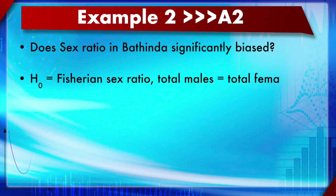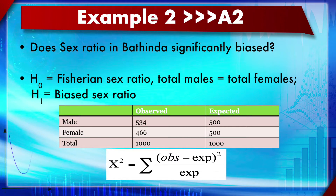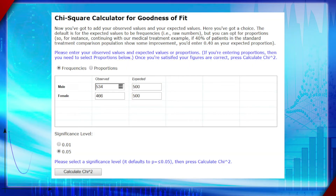Assignment 2: Does the sex ratio in Batinda significantly deviate? The null hypothesis is the Fisherian sex ratio — males equal females, or male-to-female ratio equals one. The alternative hypothesis is a biased sex ratio. fe is calculated from the explicit model of a 50:50 Fisherian sex ratio.